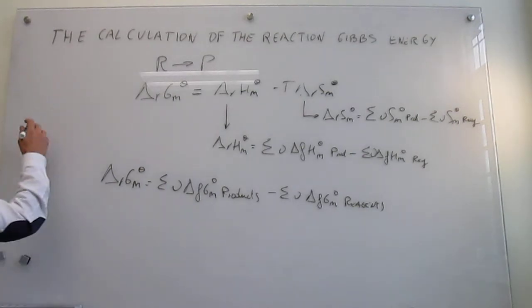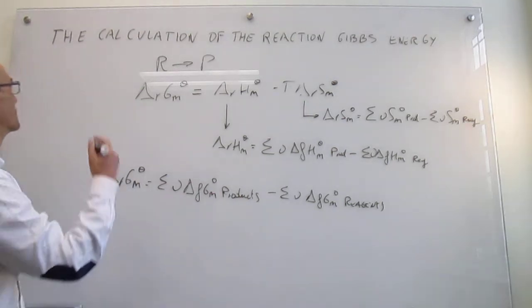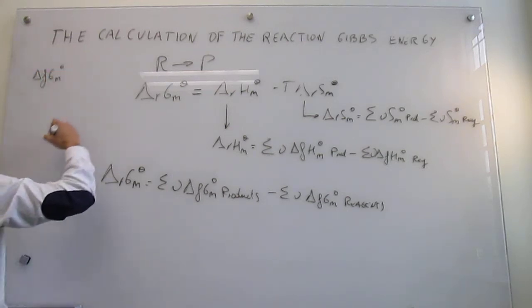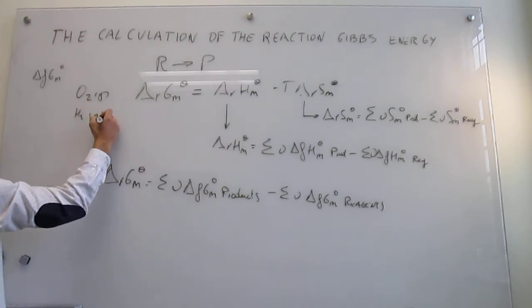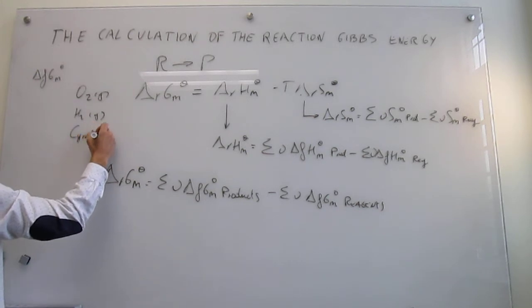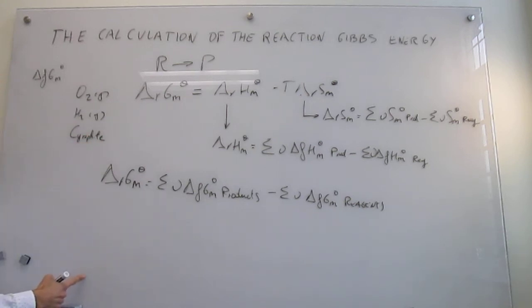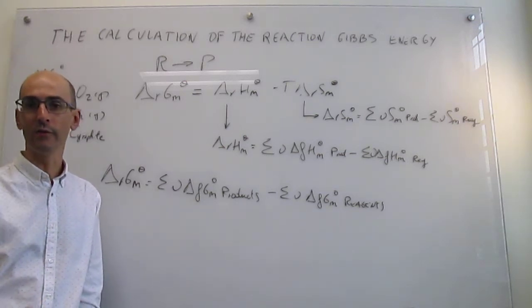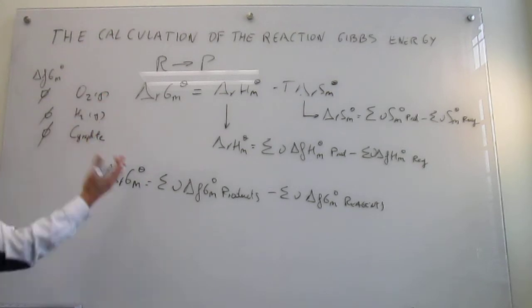As a reminder, for the Gibbs energy of formation scale, we define the most stable allotropes of constituent elements as the zero — for example, molecular oxygen (O₂) for oxygen, molecular hydrogen (H₂) for hydrogen, and graphite for carbon. By definition, the Gibbs energy of formation of all those most stable allotropes is zero. For different substances like CO₂ and water, you simply refer their Gibbs energies — which can in principle be measured — to that zero, and you are ready to go.